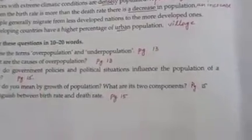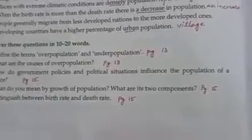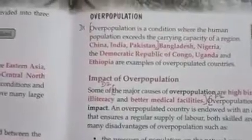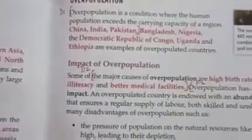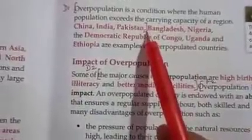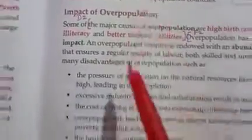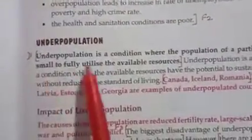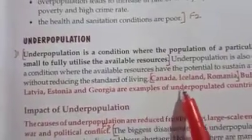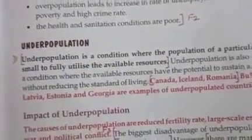Now let us move to question number D. The first question's answer is on page number 13. Turn over to page number 13. Here the answer is marked — overpopulation — up to a certain point, and then you need to write any three country names. And then underpopulation — again up to a certain point, and then any three examples for underpopulated countries.